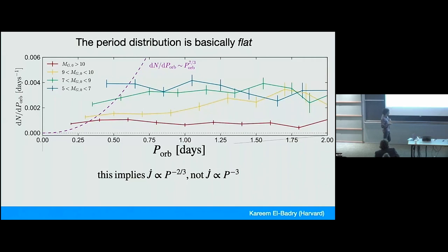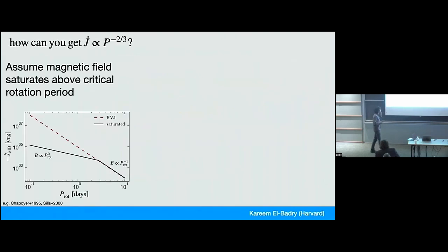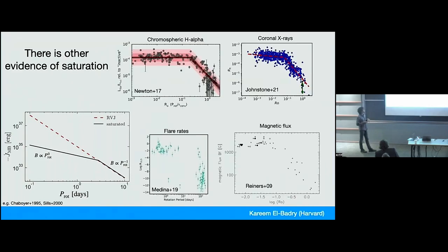What you need to get a flat distribution is something like P to the minus two thirds. And then we ask how can you get P to the minus two thirds. One way you can do it, which there's been suggestions from studies of single stars could work, is if magnetic breaking saturates at fast periods. And what that means basically is that for slow rotators, when you spin out the star faster, the magnetic field gets stronger and magnetic breaking gets stronger. But eventually you spin the star faster and the magnetic field doesn't get any stronger.